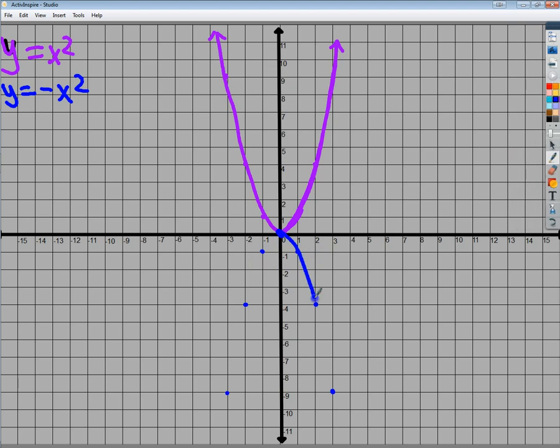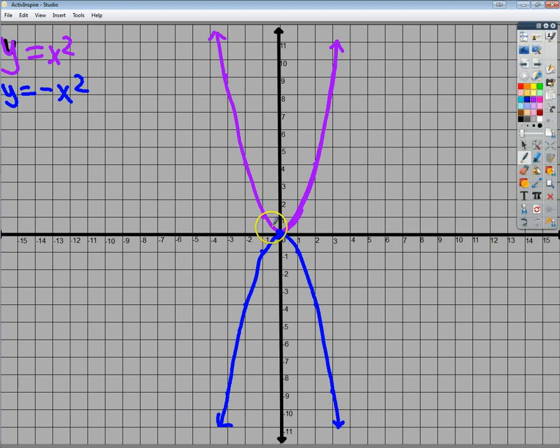In this case, my y equals negative x squared just looks like the graph, nice and flipped over. So you can see it's reflected about the x axis here. Not a huge deal, but you know, no major changes other than which way it's going.